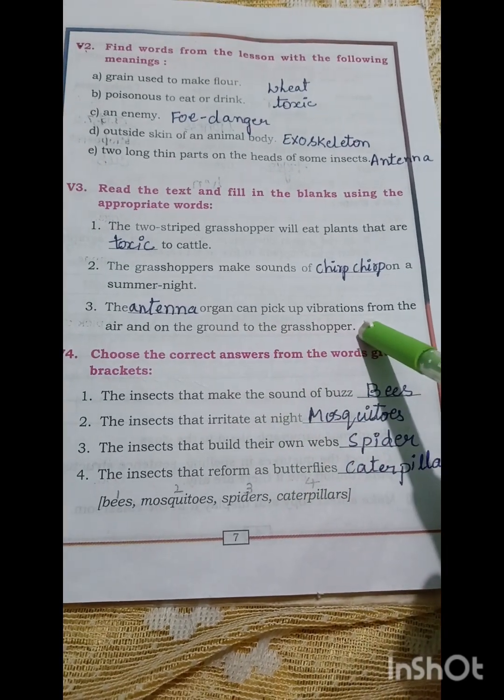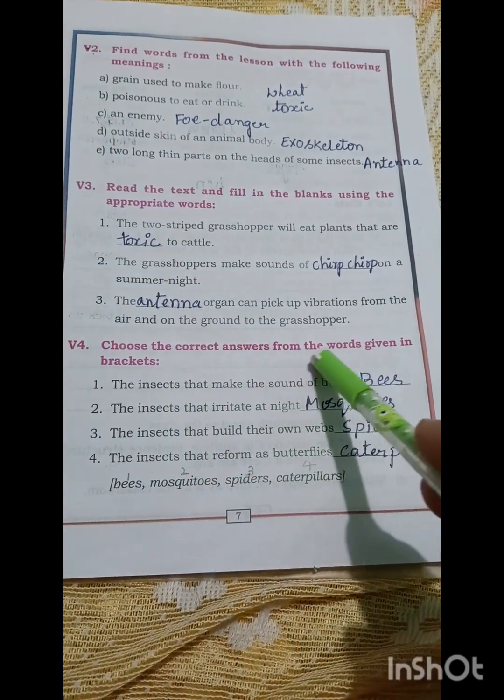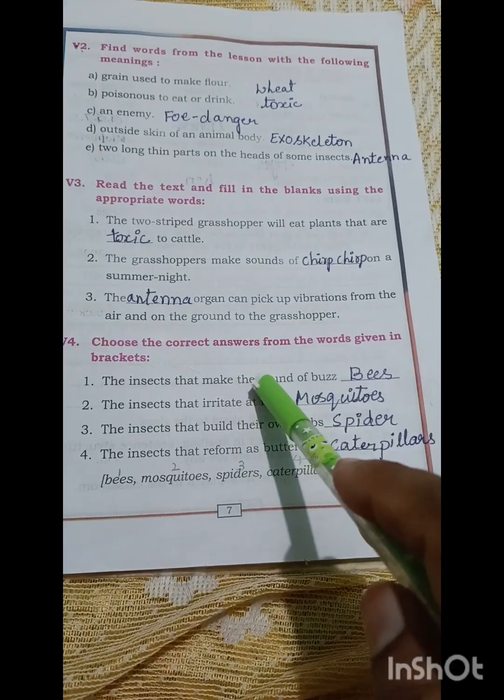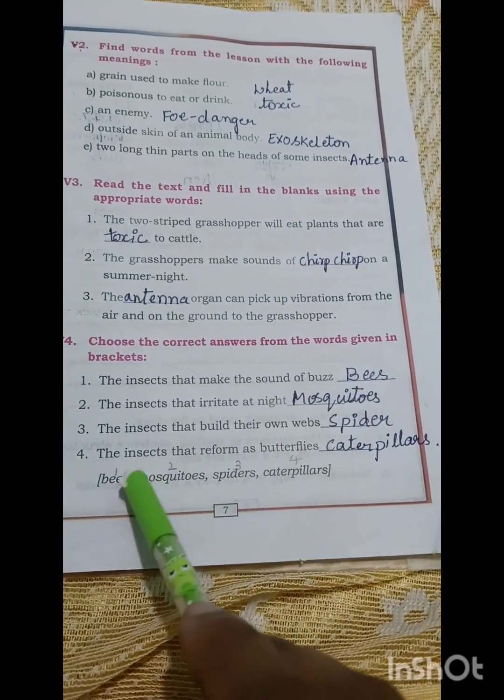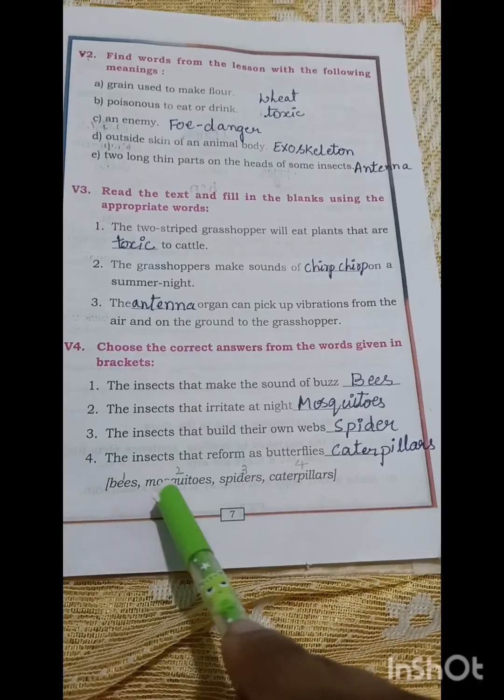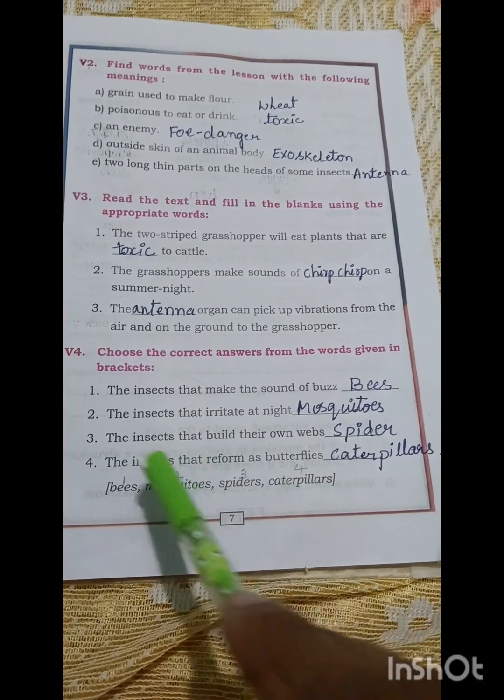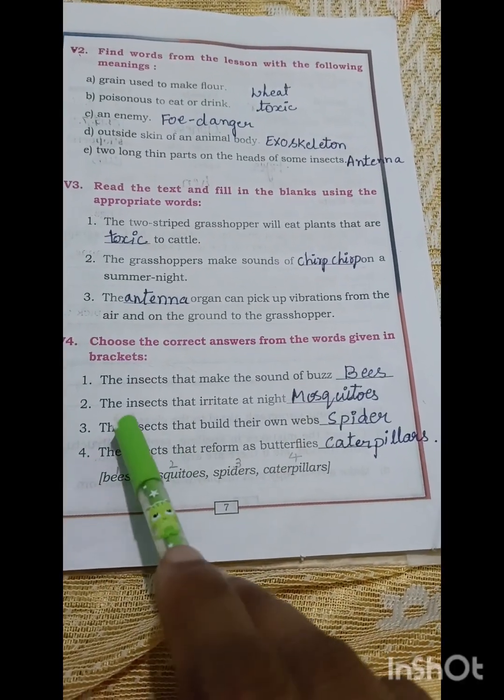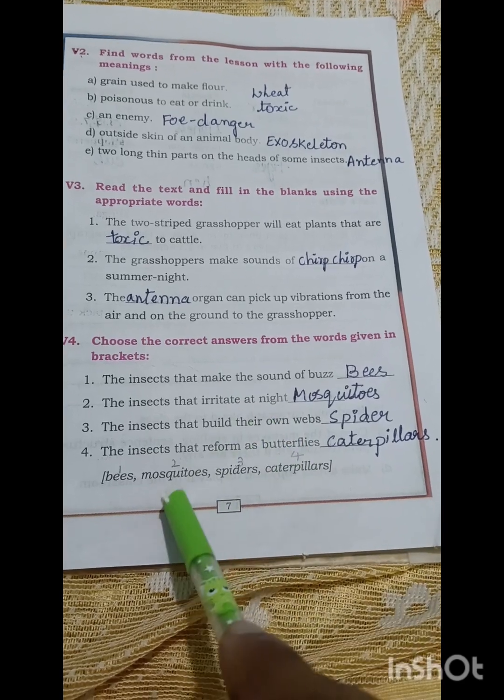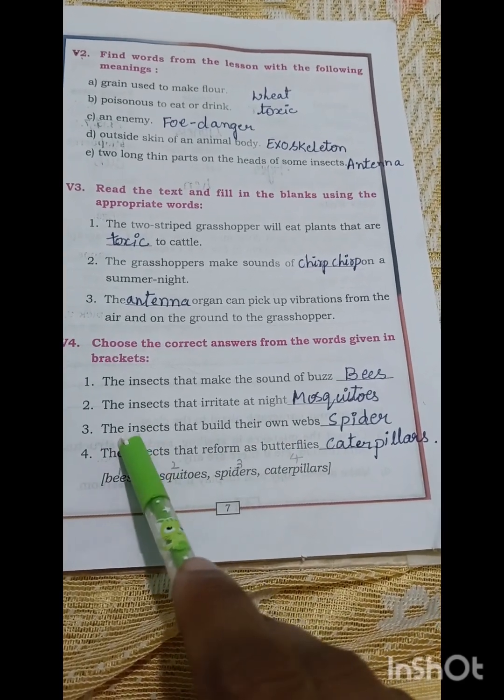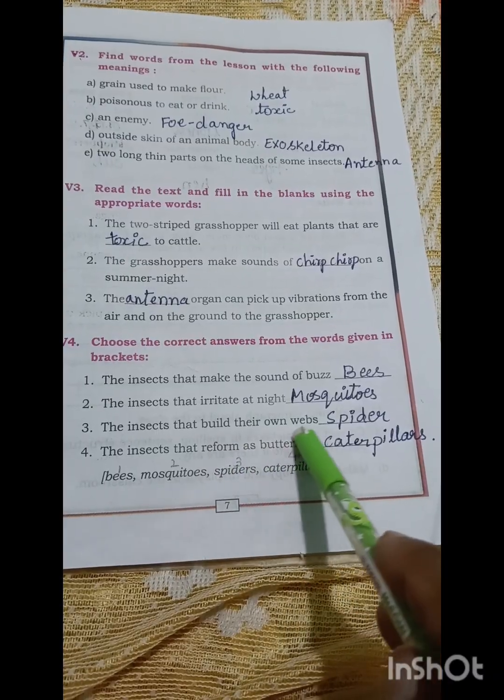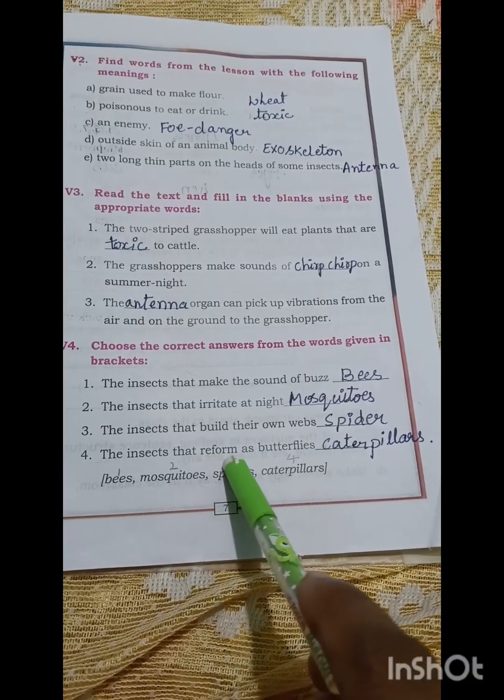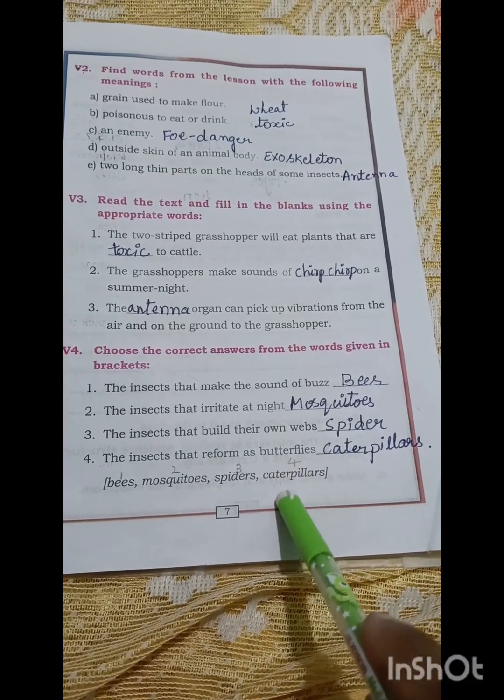Choose the correct answer from the word given in brackets. The insects that make the sound of buzz: bees, mosquito, spider, caterpillar. The insect that makes the sound buzz is bees. The insect that irritates at night is mosquito. The insect that builds their own webs is spiders. The insects that reform as butterflies is caterpillar.